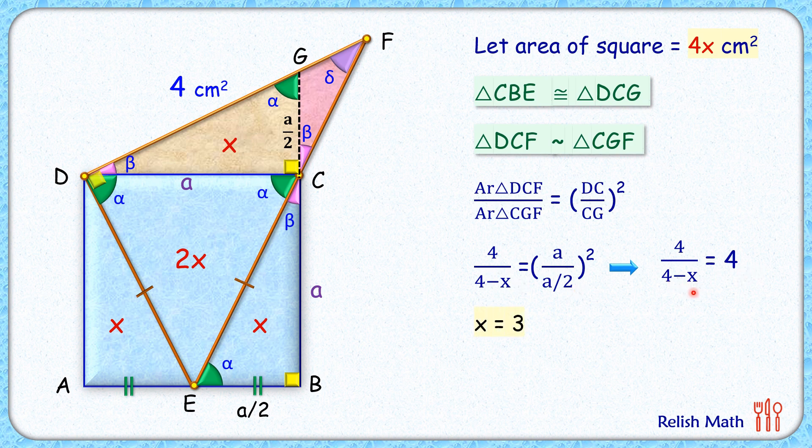Solving, we get the value of x as 3. The area of the square is 4x centimeter square, and thus the area of the square is 12 centimeter square, and that's our answer.